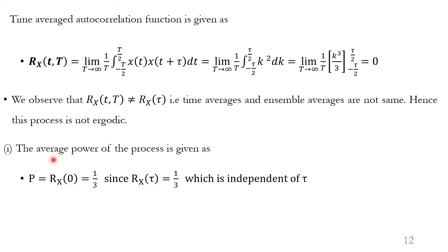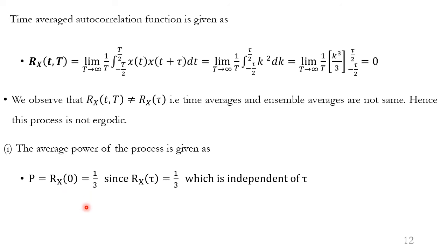The average power of the process is R_x(0) = 1/3. Since R_x(τ) = 1/3 is independent of τ, R_x(0) = 1/3 as well.